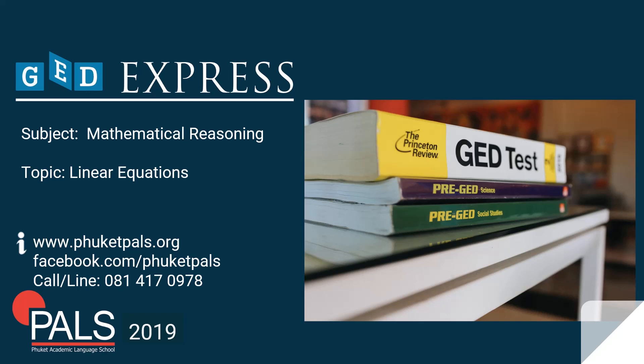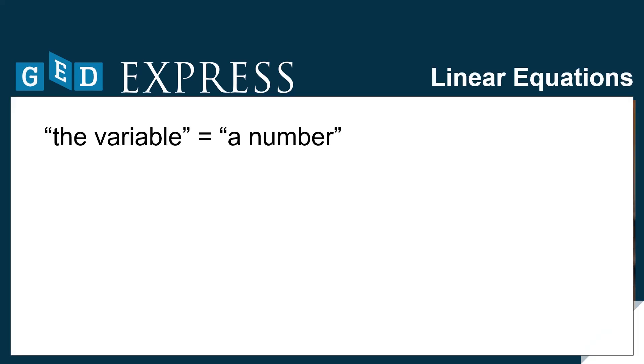To solve any linear equation, the goal is to get a statement of the form 'the variable equals a number.' In order to do this, any operation that has been applied to the variable must be undone. The one rule to remember is that any operation performed on one side of the equation must be performed on the other side of the equation as well.